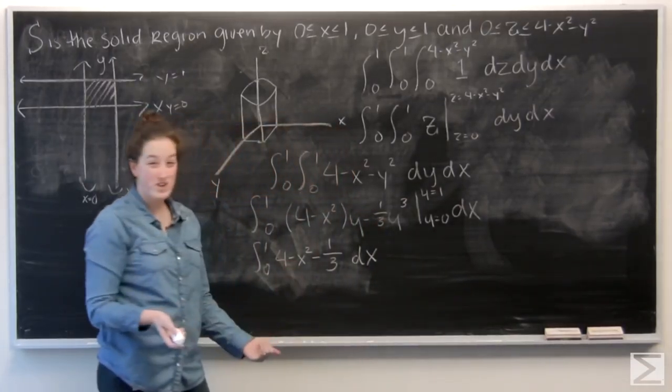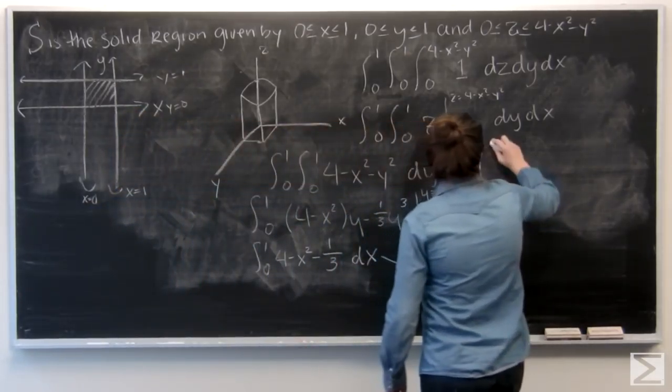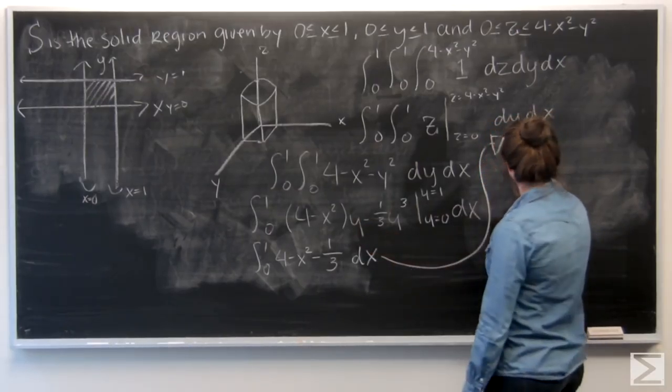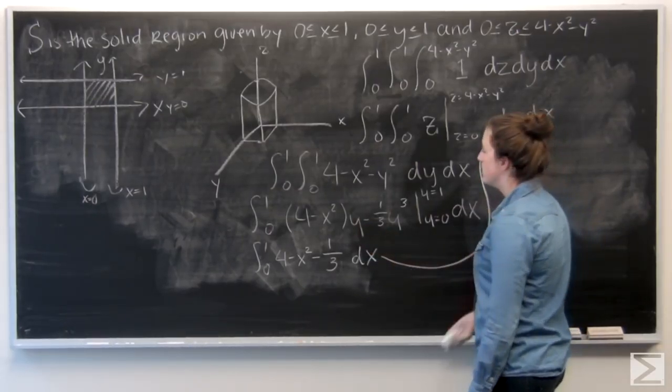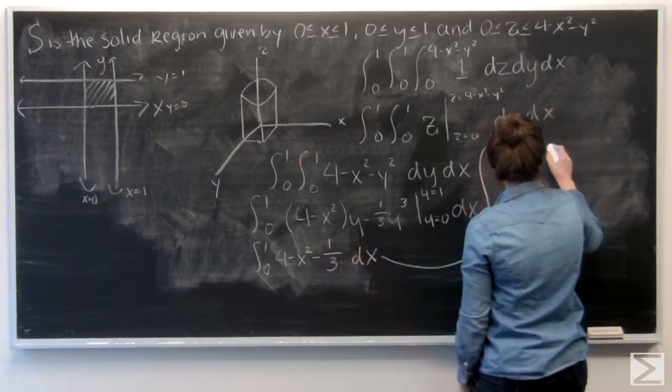And now I'm left just integrating with respect to x. Let me go ahead and move over here. So the integral of 4 is going to be 4x. And x squared is going to become 1 third x to the third. Minus.